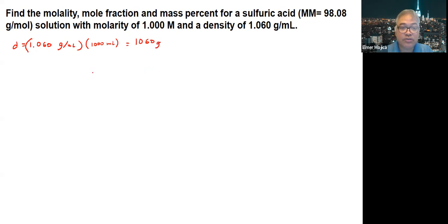So that's the total mass of the solution. And then from this, we have 1 mol of the sulfuric acid, and then we multiply it with 98.08, which is the molar mass. So that means you have 98.08 grams there of your sulfuric acid.